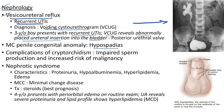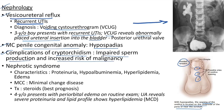Hypospadias: the most common penile congenital anomaly. The opening of the urethra is located on the underside of the penis or near the scrotum. There will also be hooded foreskin. Cryptorchidism (failure of descent of testis into the scrotum) leads to impaired sperm production and increased risk of testicular malignancy.